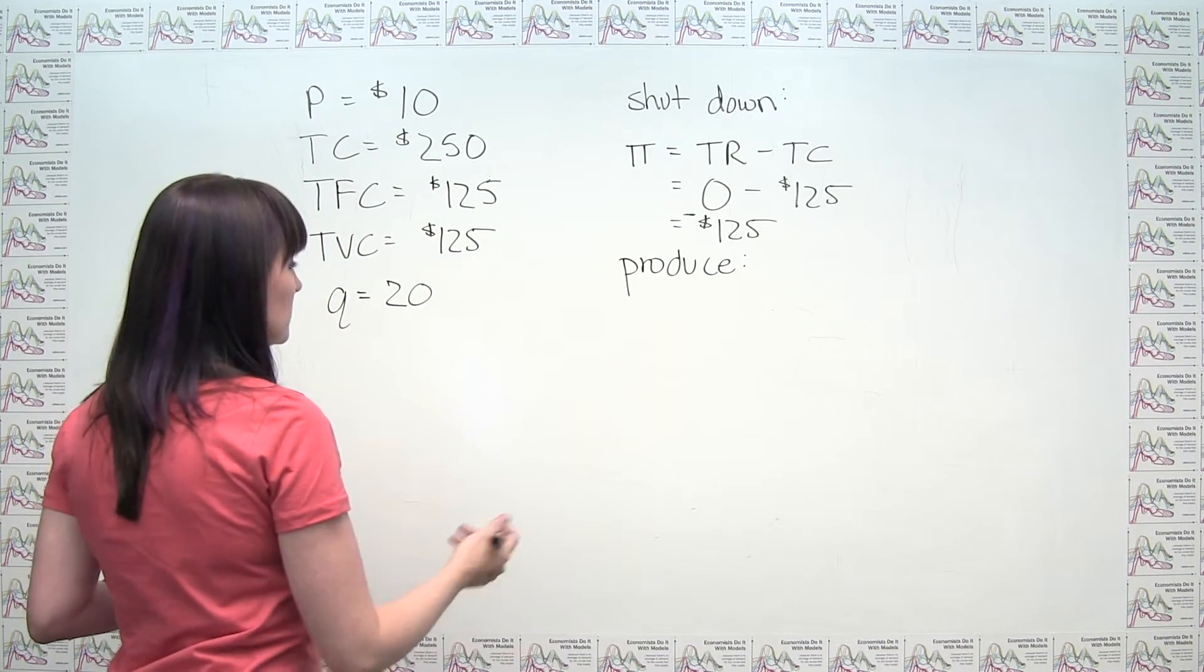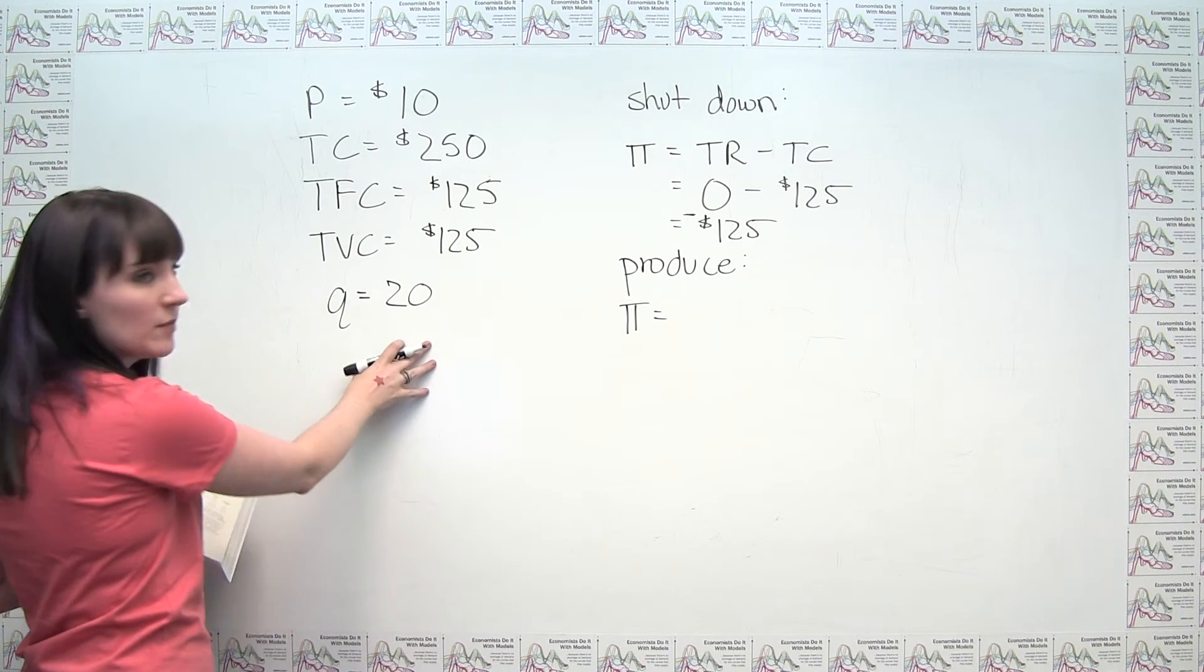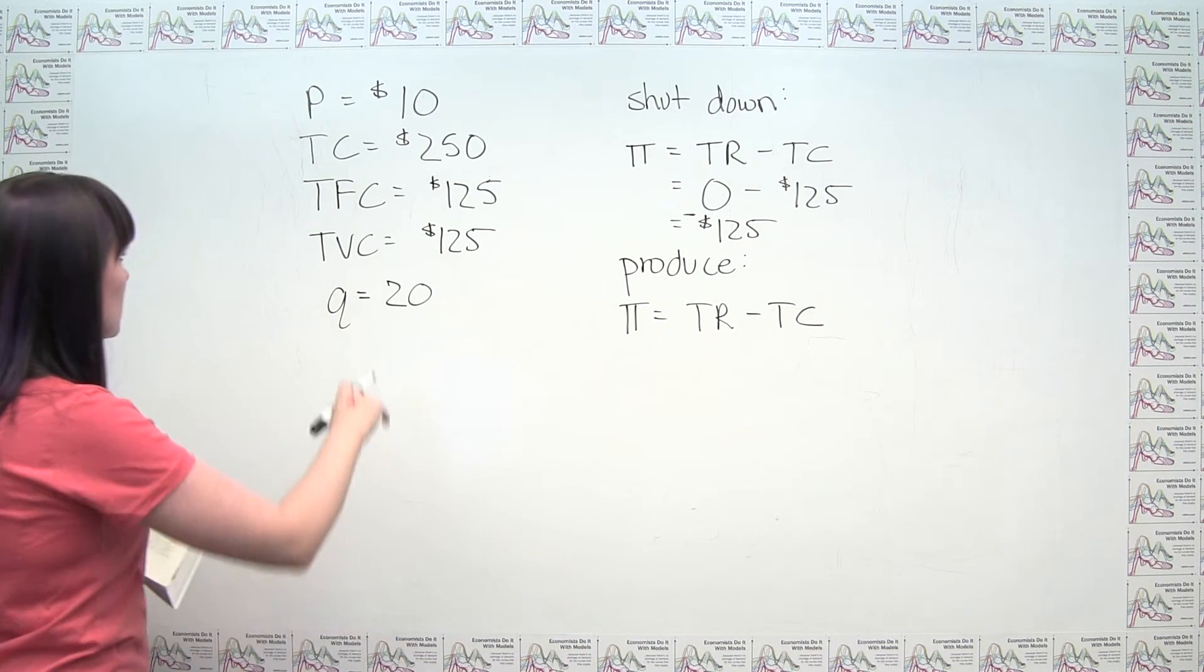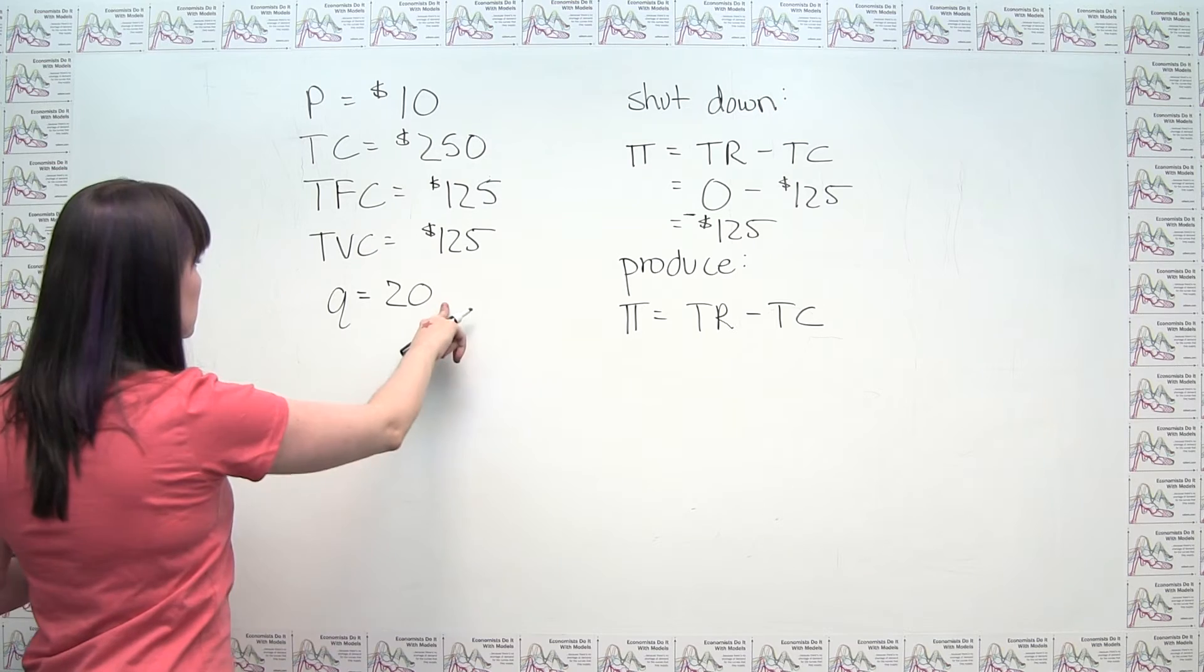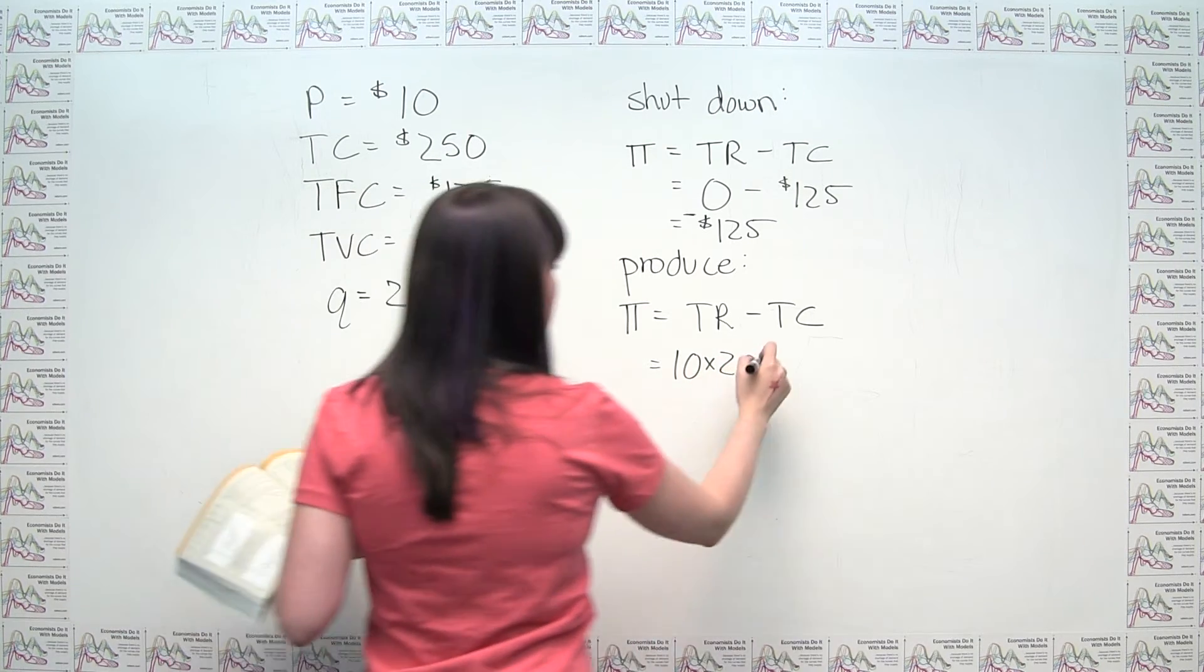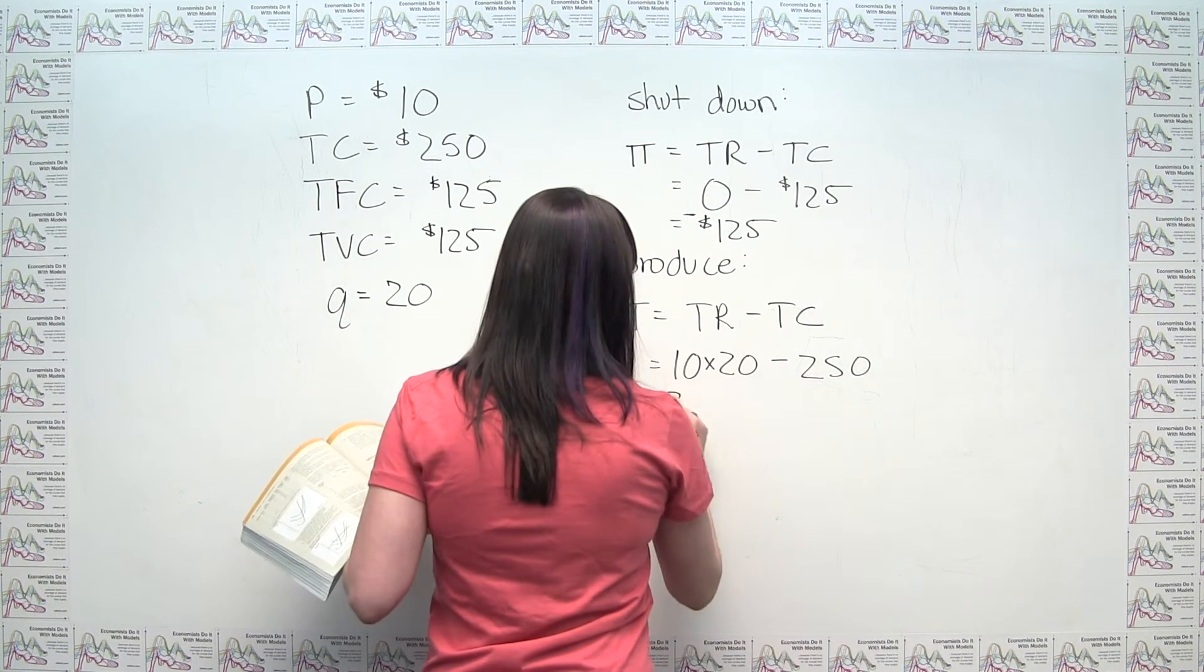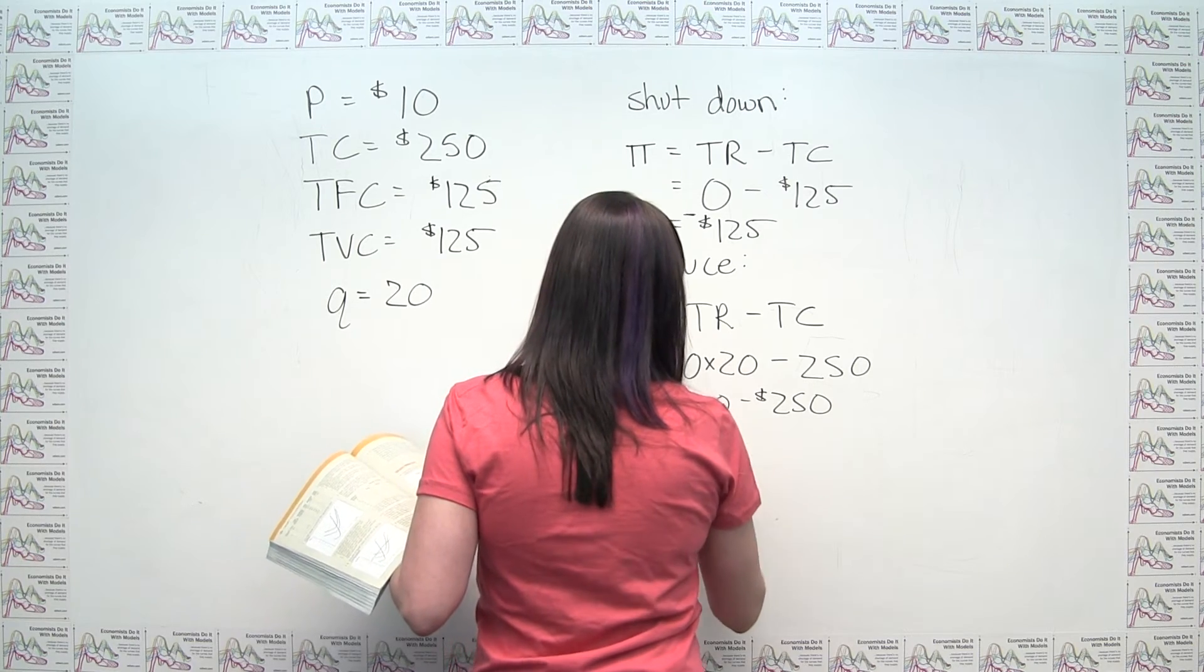If he produces, on the other hand, we can do the same analysis, but now taking into account the fact that he's actually producing, and we were in fact told how much he's producing if he chooses to do so. So now, again, profit is equal to total revenue minus total cost. So now total revenue, it's just price times quantity, right? So price of $10 times the quantity of 20, just put that in, I'll put it in as 10 times 20 for now, minus his total cost. So his total cost, we were told, was $250. So we're going to have to subtract out $250, and we get $200 minus $250, or a profit, an economic profit of negative $50.